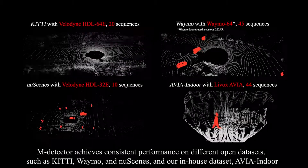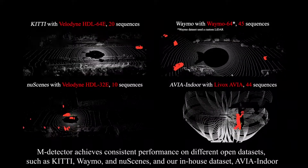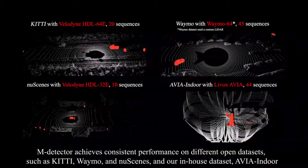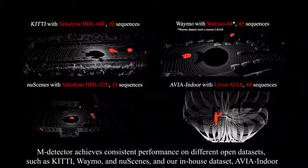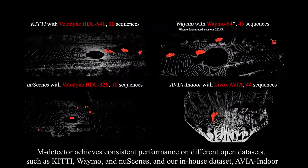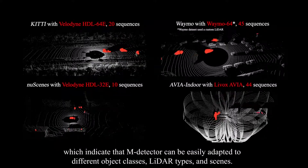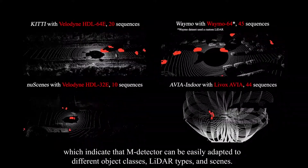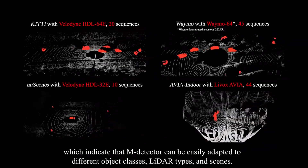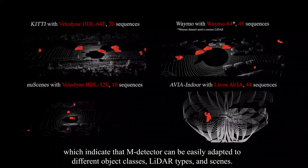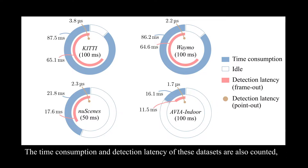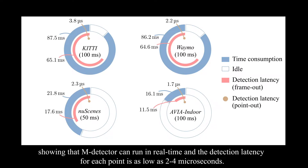MDetector achieves consistent performance on different open datasets, such as KITTI, Waymo, and new scenes, and our in-house dataset Avia Indoor, which indicate that MDetector can be easily adapted to different object classes, LiDAR types, and scenes. The time consumption and detection latency of these datasets are also counted, showing that MDetector can run in real-time and the detection latency for each point is as low as 2 to 4 microseconds.